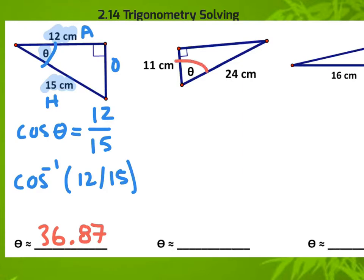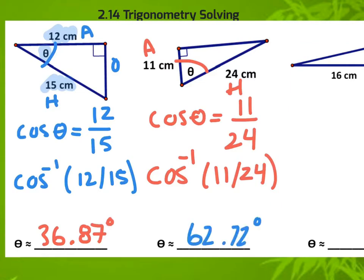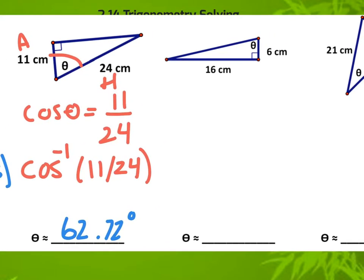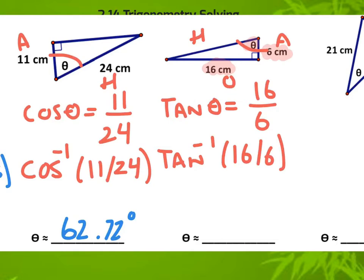Moving on to the next one — again we have an adjacent and a hypotenuse, so this is cosine. The cosine of some angle equals adjacent over hypotenuse. We use the inverse of cosine: hit second cosine and enter that value. Continuing along, in the next case this is our adjacent, this is our hypotenuse, and 16 becomes the opposite. We need the 16 and the 6, and we're finding the angle. That's tangent of an unknown angle equals opposite 16 over adjacent 6. We hit second tangent and get 69.44 degrees.